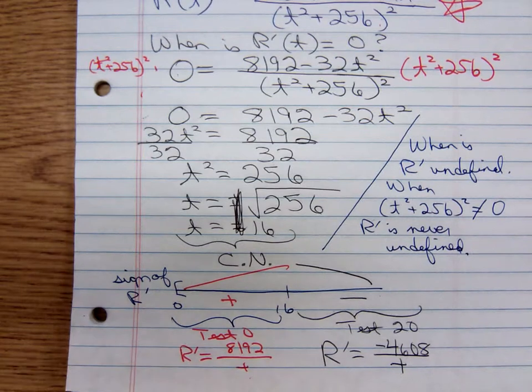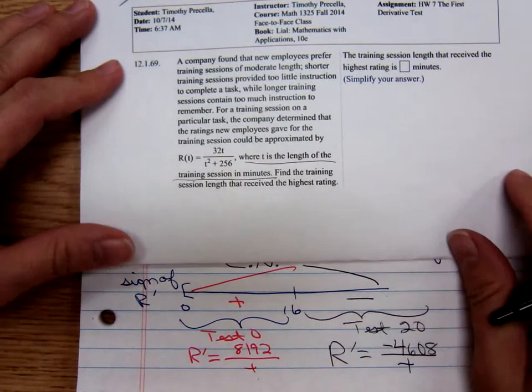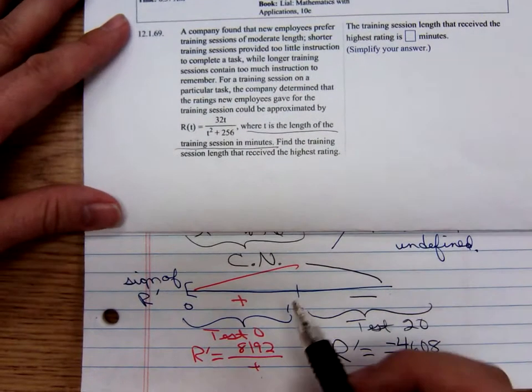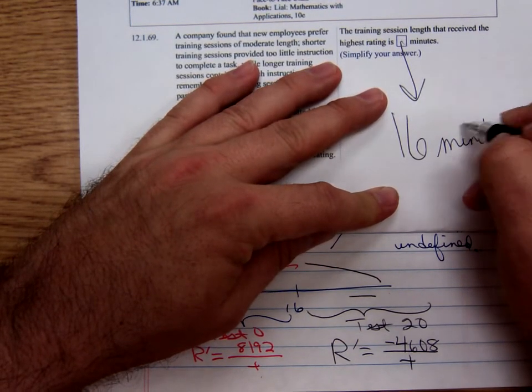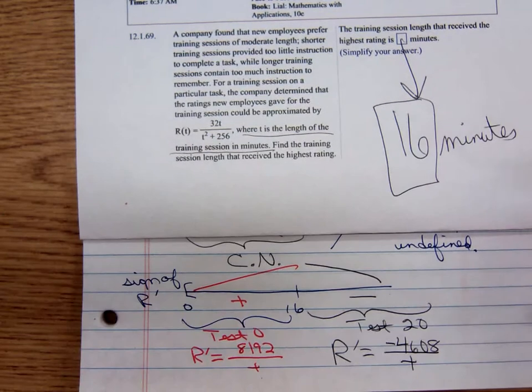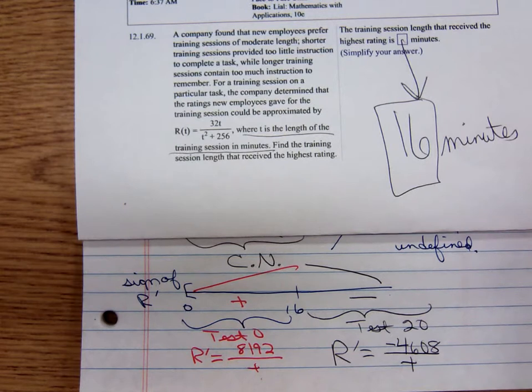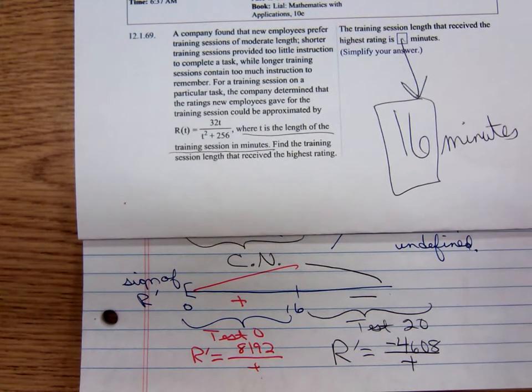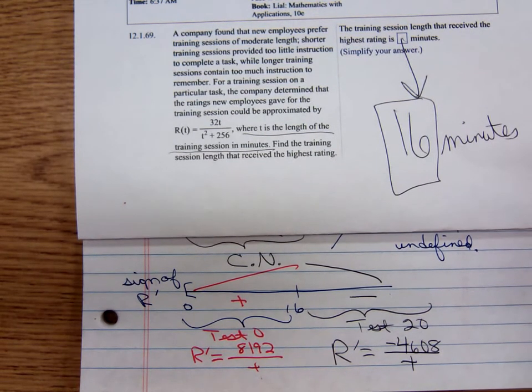So they want to know—let's go back to the original question. The training session length that received the highest rating is how many minutes? Where was our maximum? At 16. 16 minutes. This is obviously not something that's very advanced that they're being trained for. They're not going to work for General Dynamics or Boeing designing aircrafts. This is their training session for just 16 minutes. Any questions there? Thank you.